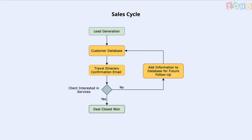Once their leads are generated, they are sent straight to the customer database and the travel agency can send a follow-up email to the client. If the client is interested, the deal is closed as won and their information is passed to the accounting and operations team for further processing. If they're not interested right now, this information will be added to their file in the database, allowing the team to nurture the lead and hopefully convert them in the future.